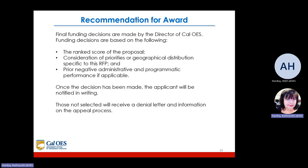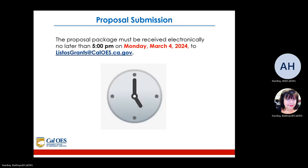Once the decision has been made, the applicant will be notified in writing. Those not selected will receive a denial letter and information on the appeal process. Take note: the proposal package must be received electronically no later than 5 p.m. on Monday, March 4, 2024 to listosgrants@caloes.ca.gov.